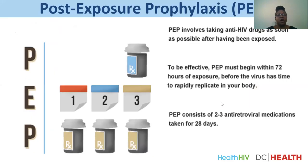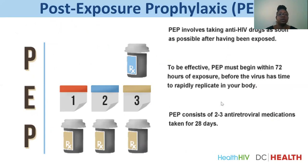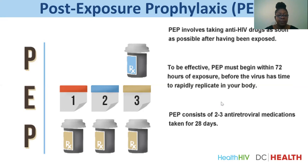Then we have PEP — post-exposure prophylaxis — which we've known in the past as an occupational emergency drug. If someone has accidentally had a needle-stick or other exposure, they go to their provider and get PEP. PEP involves taking antiretrovirals within 72 hours of exposure, before the virus has time to replicate. It consists of two to three antiretroviral medications taken for 28 days consistently, in order to prevent someone accidentally exposed from developing HIV.